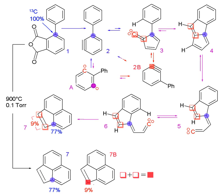Isotopic labeling is a technique used to track the passage of an isotope — an atom with a detectable variation in neutron count — through a reaction, metabolic pathway, or cell.